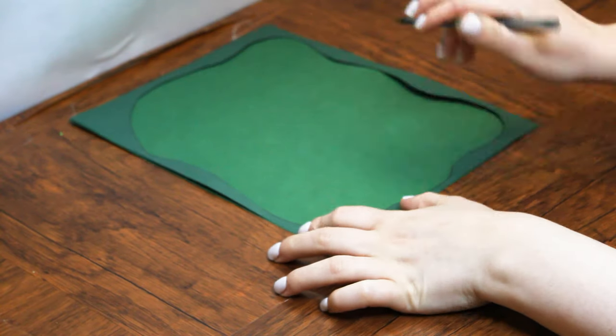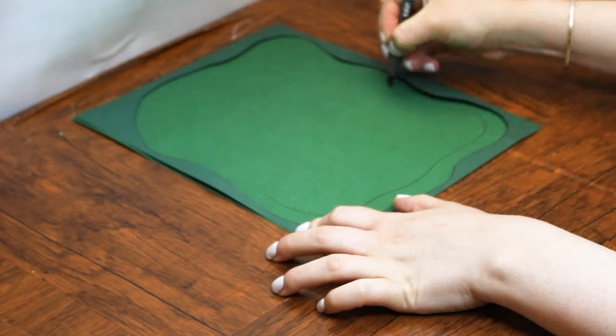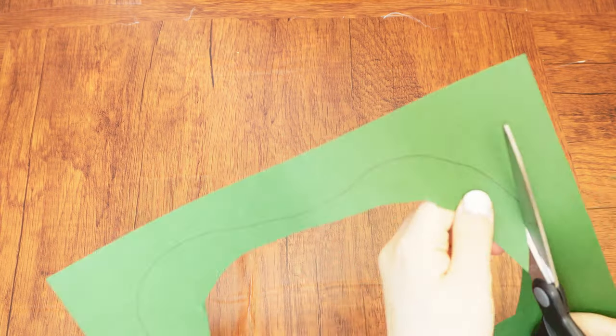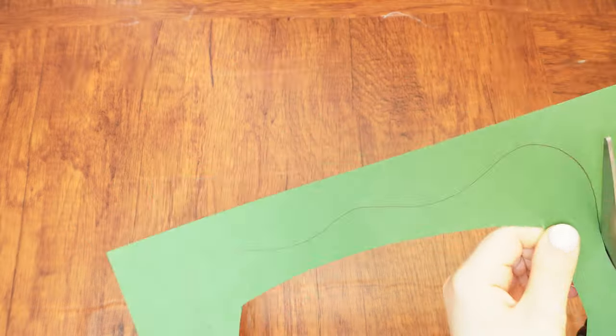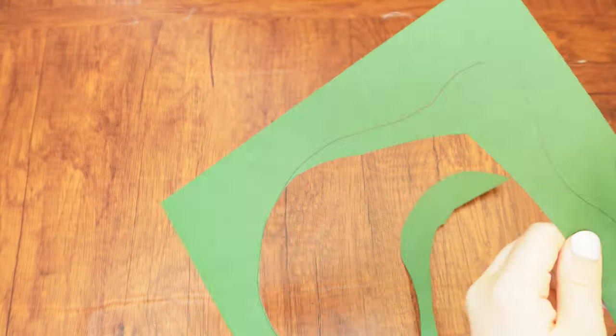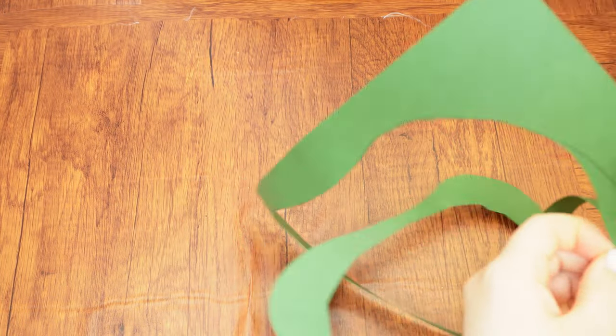Place the dark green cutout on top of the next lighter sheet of cardstock and use it as a guide to draw the same shape but smaller. Cut it out in the same way you cut out the first sheet except this time you should be left with a cutout that has slightly thicker edges and a slightly smaller space in the middle.